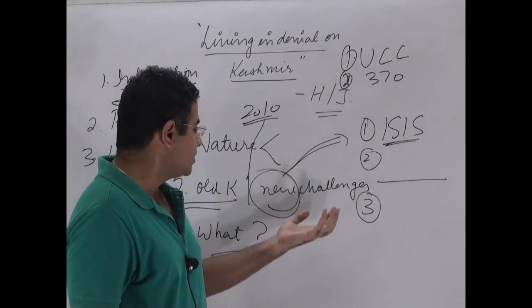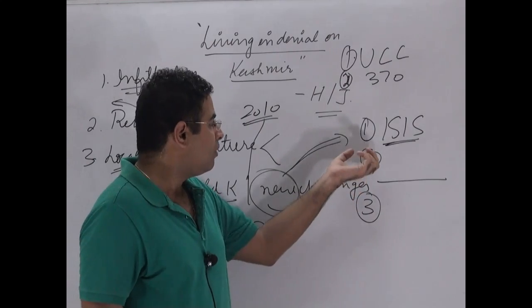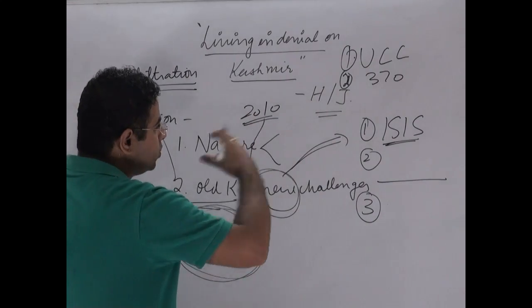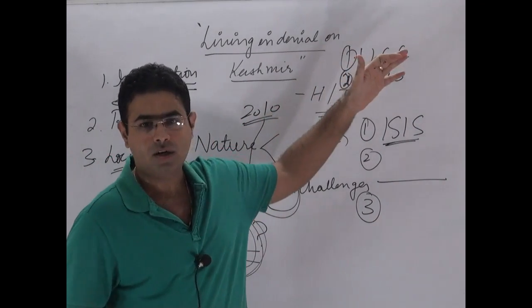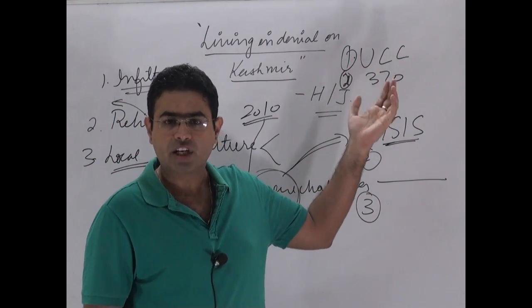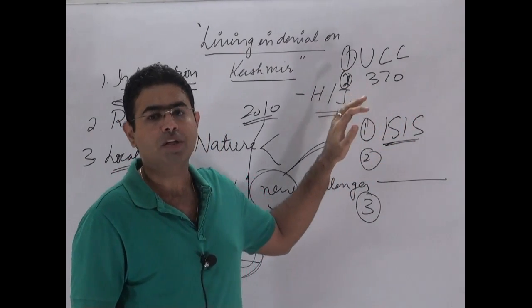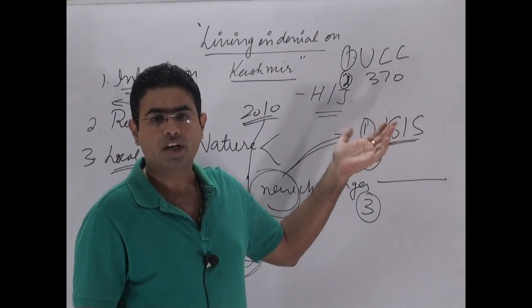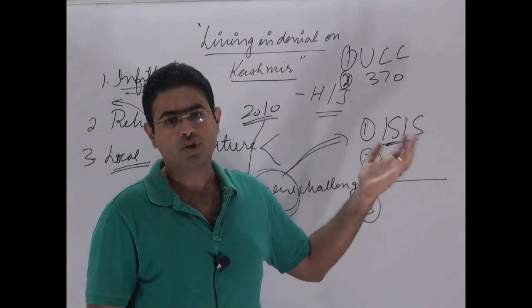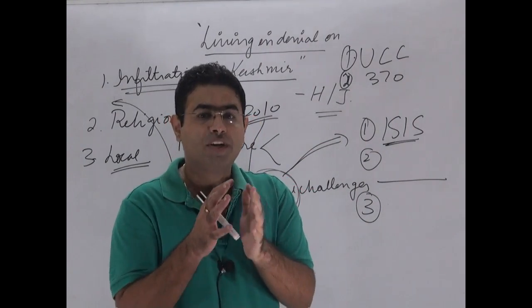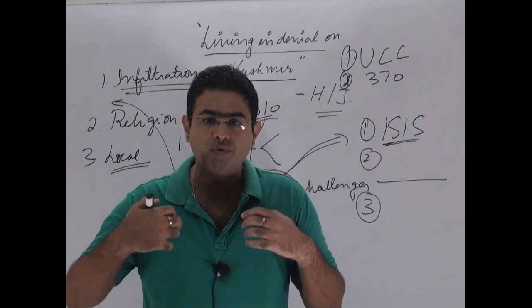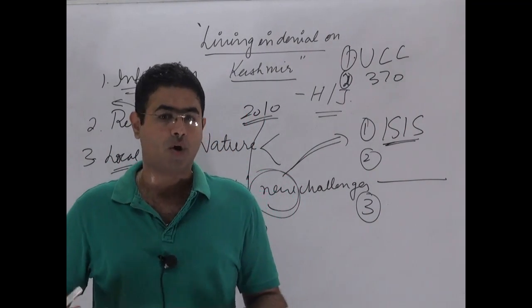So the new challenge that is existing in Kashmir is a very integrated challenge. This situation is becoming more and more complex. Now the Kashmir issue is about Uniform Civil Code, Article 370, insurgency, corruption administration, infiltration, support from cross border. It is a kind of integrated, very complex problem. We can solve this problem if we will act in a multi-pronged manner. And how can that be done?